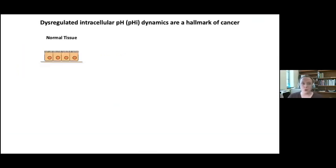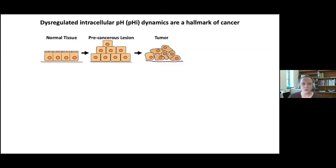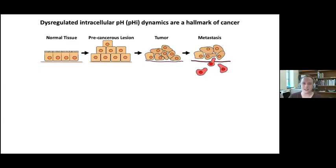As cancer develops, a normal, organized tissue becomes disorganized to form a precancerous lesion. Then it grows to produce a tumor, and if left undetected and untreated, cells in that tumor can go through additional changes that cause them to become metastatic and travel to distant sites in the body.